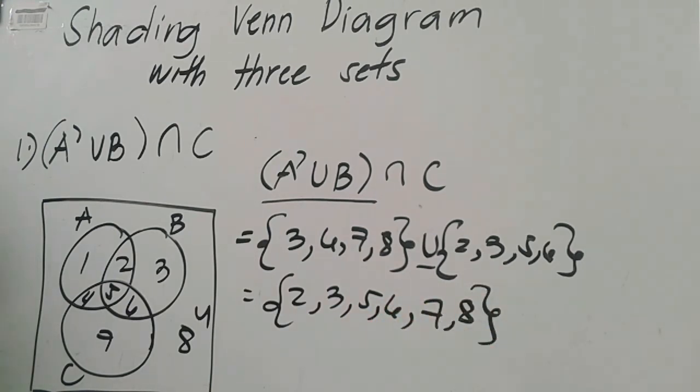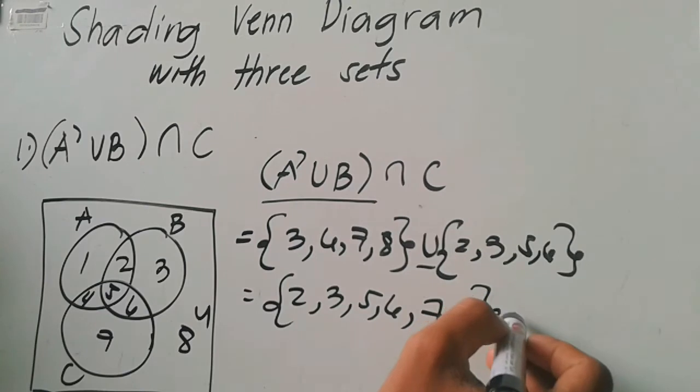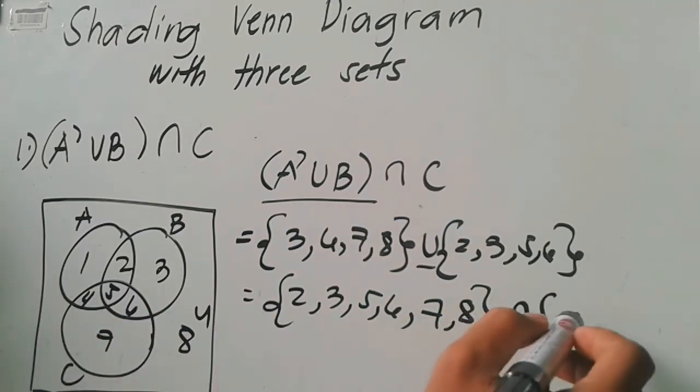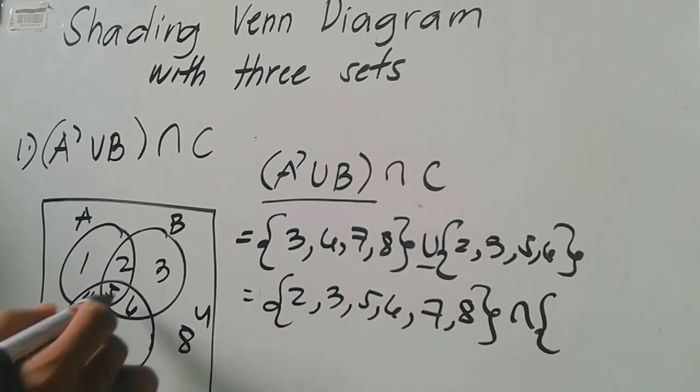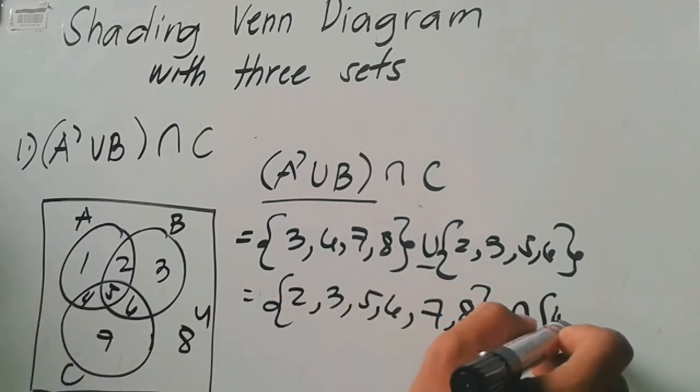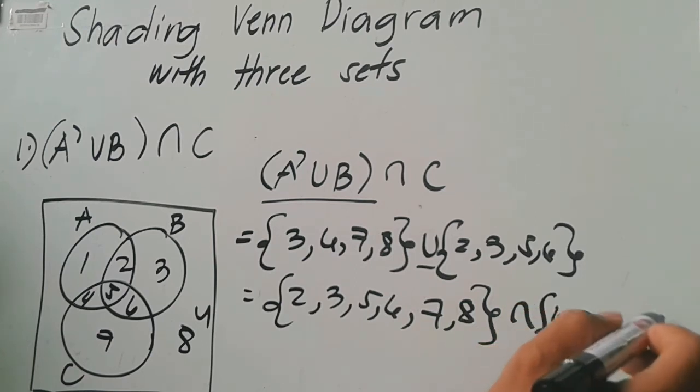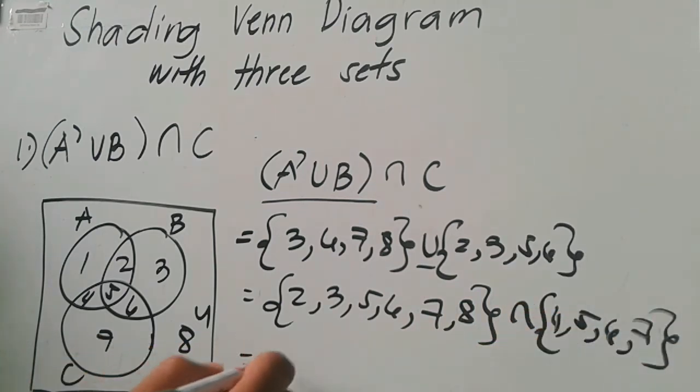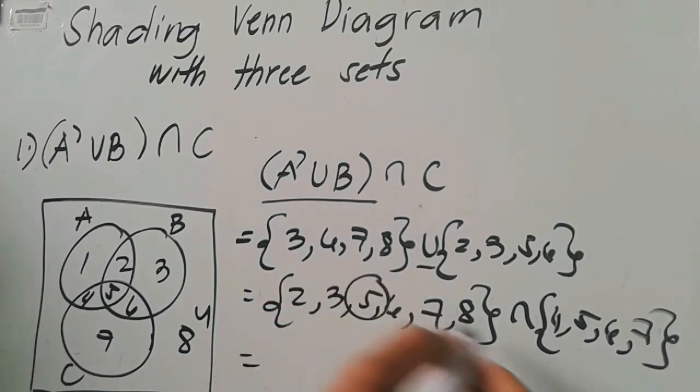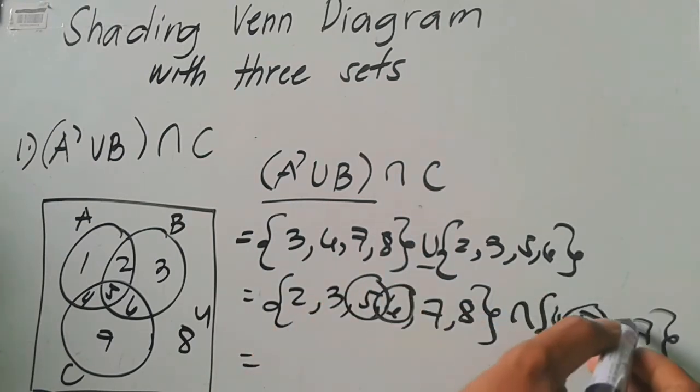Yan lahat. Then next, meron pa tayong intersection. Ano yung C natin? We have, C natin set C is four, five, six, then seven. Pag sinabing intersection, the set of all the elements which are common, parehas to both A and B or to the first set and the second set. Ang common natin is we have five, six, seven.